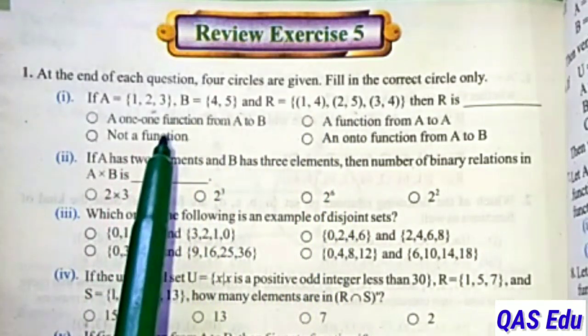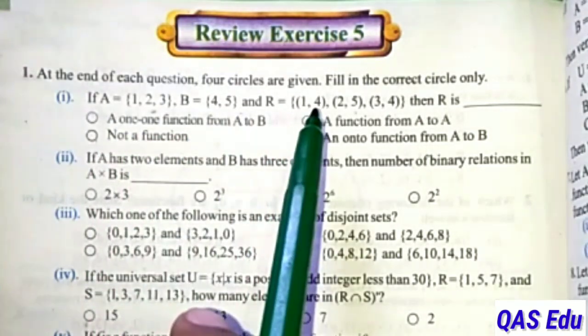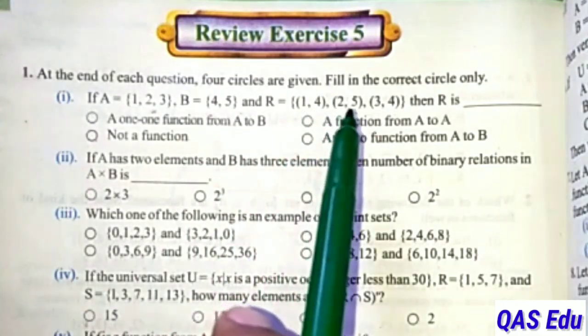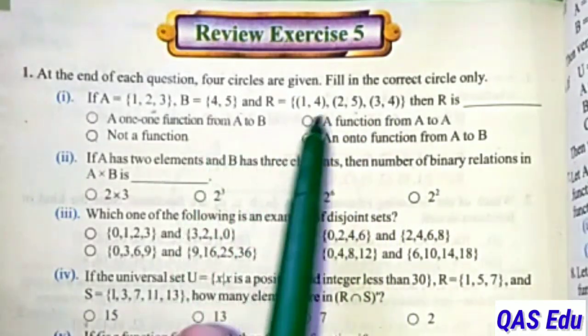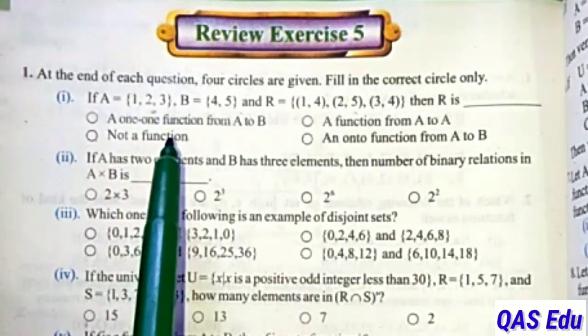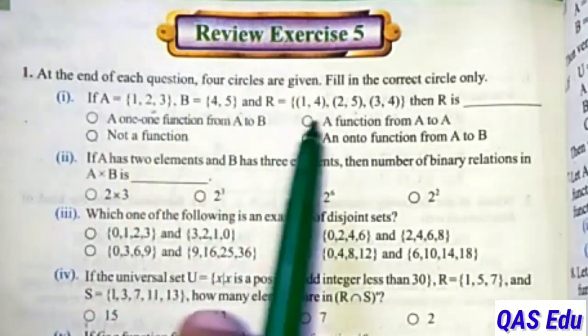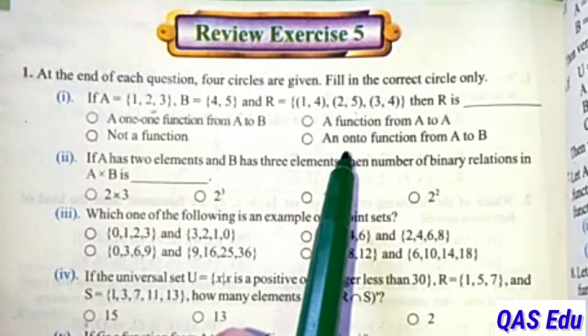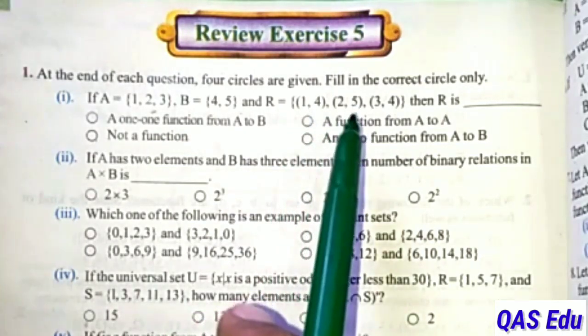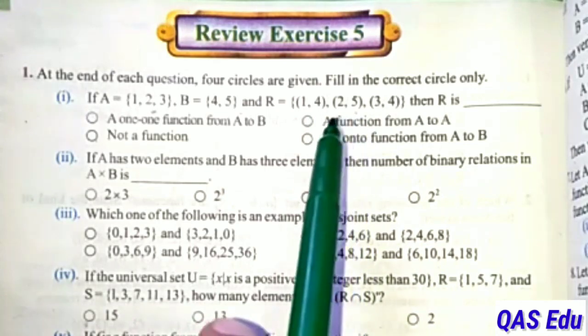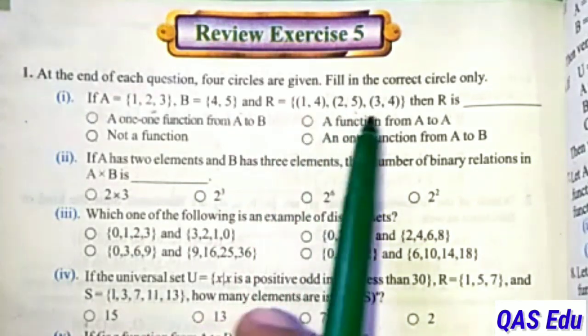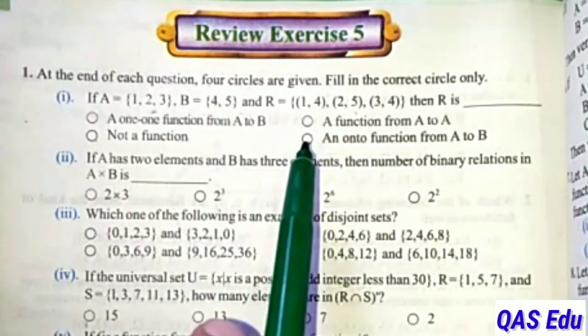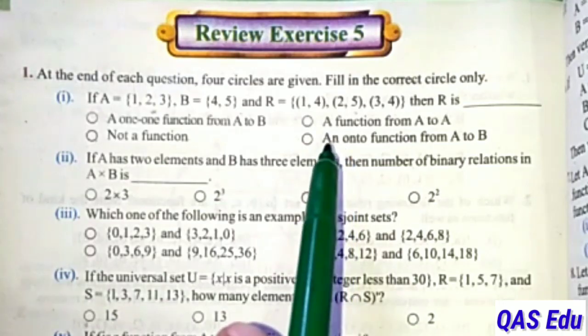Now what type of function? For 1-1 function, check the range - the second elements. In range we have {4, 5, 4}. The 4 repeats. Since it repeats, it's not a 1-1 function. For onto function, check if range equals codomain. Range is {4, 5}, if we take 4 once. Range is {4, 5} which equals set B. So it's an onto function.